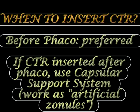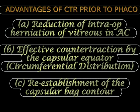Most surgeons prefer to implant the CTR before phacoemulsification as it provides stabilization during the procedure. However, if CTR is inserted after phacoemulsification, a capsular support system must first be used as artificial zonules for stabilization during phaco. The advantage of inserting CTR after phaco is better visualization and less risk of entanglement in cortical fibers. The advantage of inserting CTR before phaco is smoother surgery, less vitreous prolapse into the anterior chamber, and effective circumferential stress distribution preserving the capsular bag.